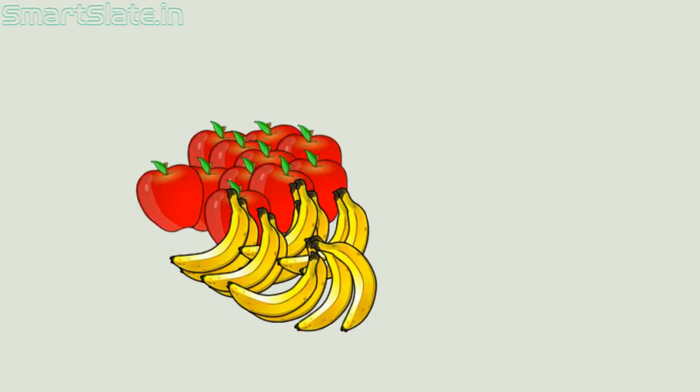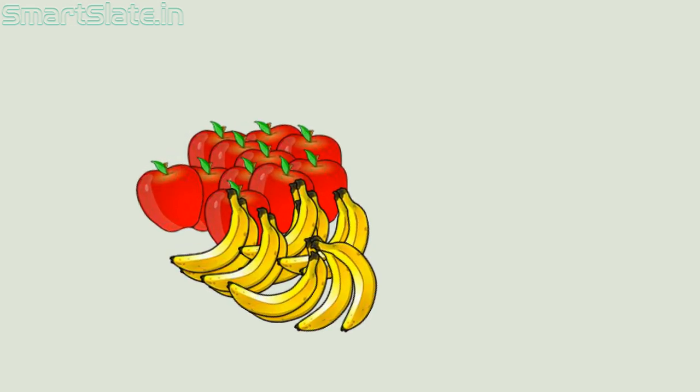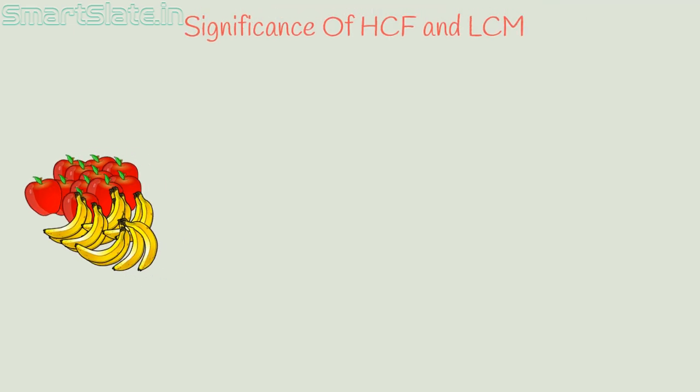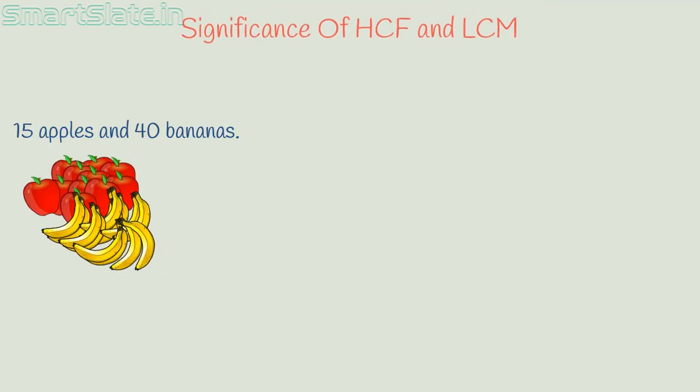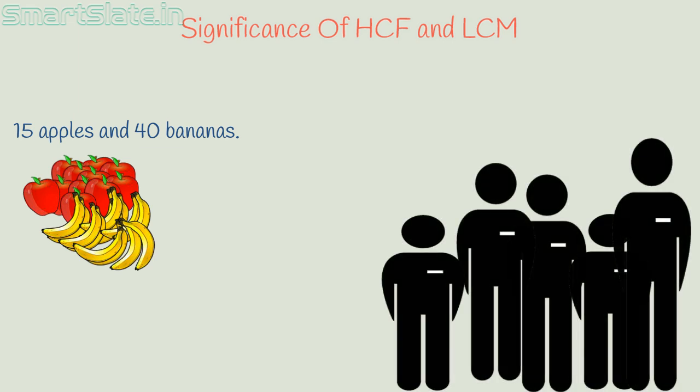Let's take another scenario. You have 15 apples and 40 bananas, and you want to donate those to orphans. You want to donate apples and bananas together, equally among the orphans. So, how many orphans can you help? Basically, the question demands finding the highest common factor of 2 numbers.